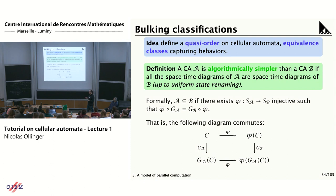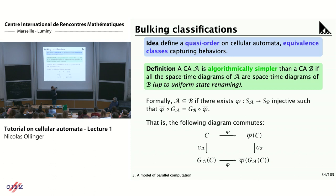To say that, the name of the state does not matter, so I authorize some way to map the states of A to the states of B — my function phi. What does it mean that the spacetime diagrams of one automaton are inside the other? It means that a certain diagram commutes: if you take a configuration, apply the rule, or if you apply my re-encoding of the states in a uniform way and apply the rule of the other automaton, it's the same as computing and encoding.